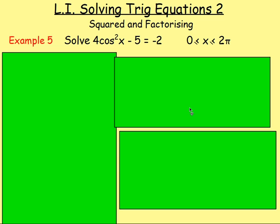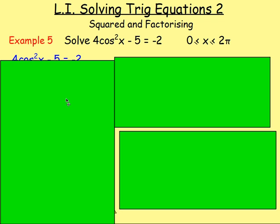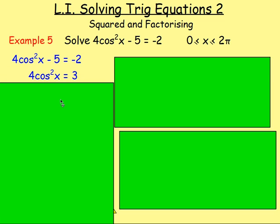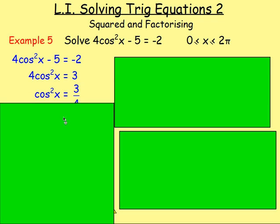Solve 4cos²x minus 5 equals negative two. The first thing you want to do is get it in the form of cos x equals or sine x equals, so we need to get rid of the coefficient and the constant. Add five to both sides — we'd have 4cos²x equals three. Divide by four and we have cos²x equals three quarters.